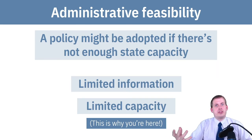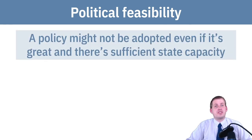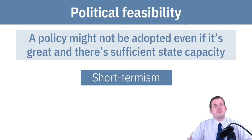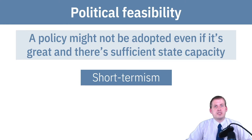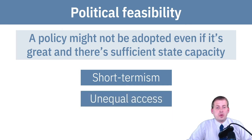The third type of government failure is political feasibility. Even if you have a good policy and all the state capacity to make it work, it can still die because of politics. One major reason is short-termism: politicians will often only adopt policies that help them win the next election. A policy that needs to play out over 50 years — like addressing climate change — won't get touched because it won't help re-election and may actually hurt their chances.